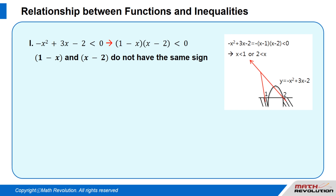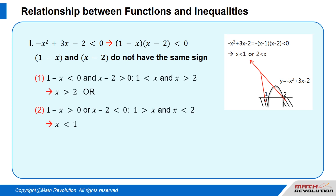Case 1: We are looking for negative x squared plus 3x minus 2 is smaller than 0, which can be factorized as (1 minus x)(x minus 2) is smaller than 0. This means that the factors (1 minus x) and (x minus 2) do not have the same sign. That is: 1 minus x is smaller than 0, or 1 minus x is greater than 0.